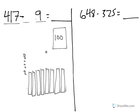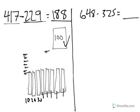Let's count how many we have left. I can see we still have 100. We have 10, 20, 30, 40, 50, 60, 70, 80. There's 180, 1, 2, 3, 4, 5, 6, 7, 8, 188. So that means that 417 minus 229 is equal to 188.